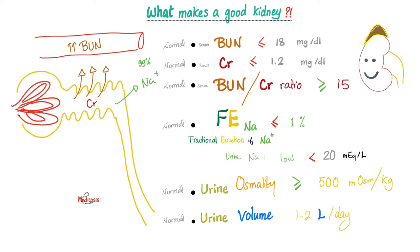Let me tell you what makes a good kidney. A good kidney is capable of getting rid of waste products, leaving less waste in the blood. The BUN-to-creatinine ratio should be greater than 15. A good kidney should not waste lots of salt in the urine, so the fractional excretion of sodium should be less than 1% and the urine sodium should be low. A good kidney is capable of concentrating your urine, raising the urine osmolality, and producing a robust volume of urine — about 1 to 2 liters every day.